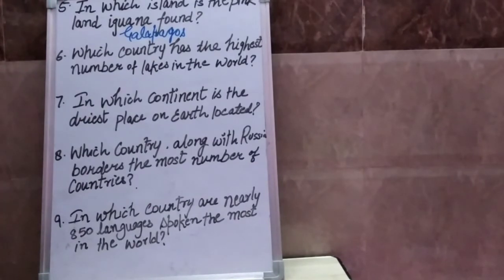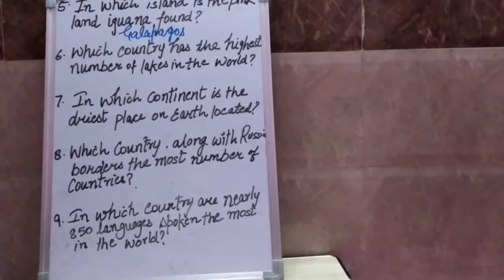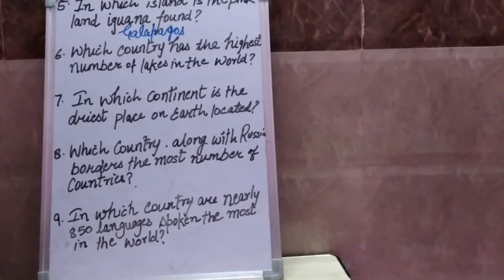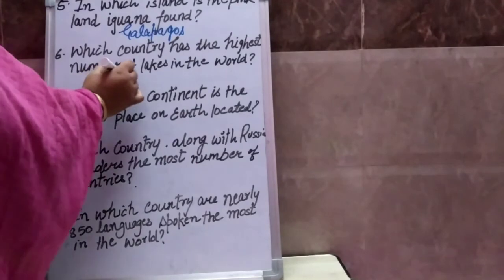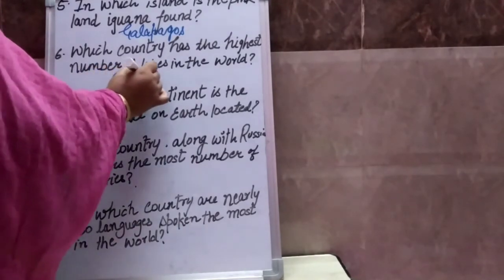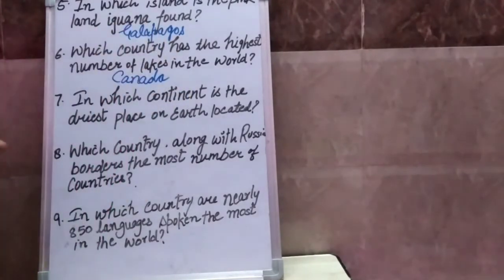Question number six: Which country has the highest number of lakes in the world? Duniya mein sabse adhik jheelon ki sankhya kis desh mein hain? Means koun se desh mein sabse jyada jheelein hain? Your answer is Canada — Canada hai kaisa desh hai, jahaan sabse jyada jheelein hain.